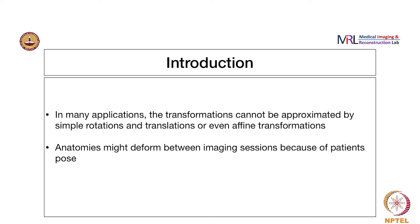That might also be because of the patient's pose. For instance, in some applications the patient lies in the bed for a prolonged period of time and images are acquired over a particular anatomical location. But even in that situation, because of respiratory motion, there could be deformations which cannot be approximated by rigid body transformations. There are other applications where the patient is followed over a longer period of time with multiple imaging sessions, and he or she might not have the same pose. There is of course going to be deformation of various organs.